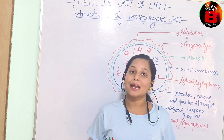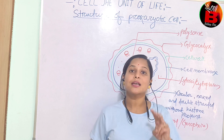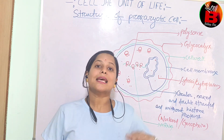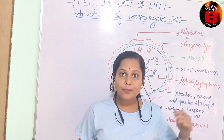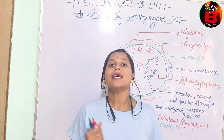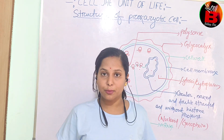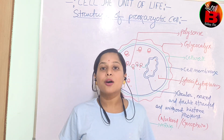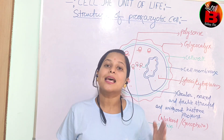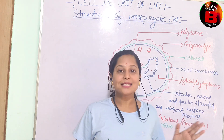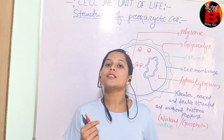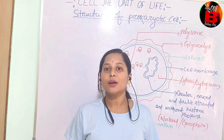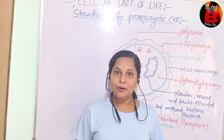The 70S ribosome has two subunits: a larger subunit and a smaller subunit. The larger subunit is 50S and the smaller subunit is 30S.